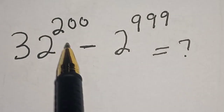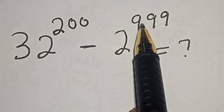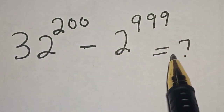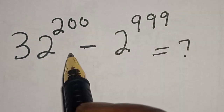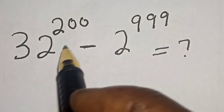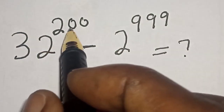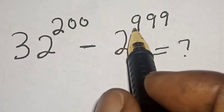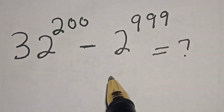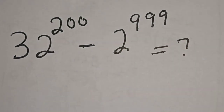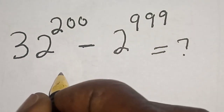32 raised to power 200 minus 2 raised to power 999 is equal to what? Hi everyone, welcome to my class. In this class we want to solve this math problem without using a calculator: 32 raised to power 200 minus 2 raised to power 999. Before we proceed, please don't forget to like, share, comment and subscribe.